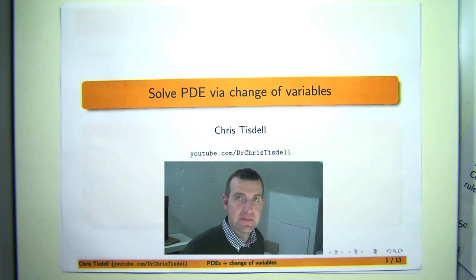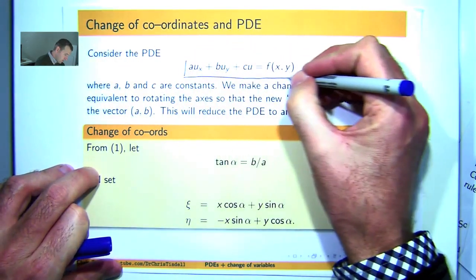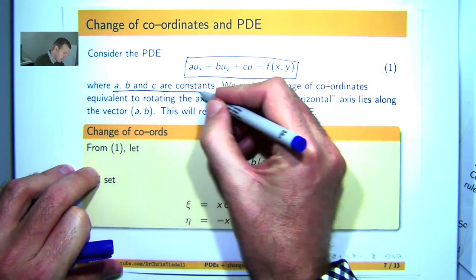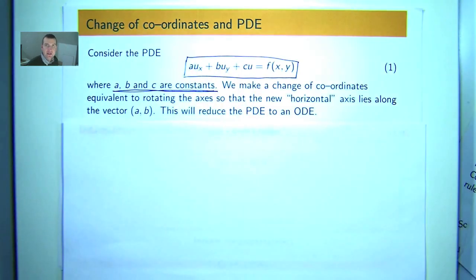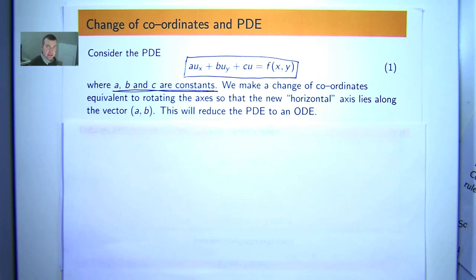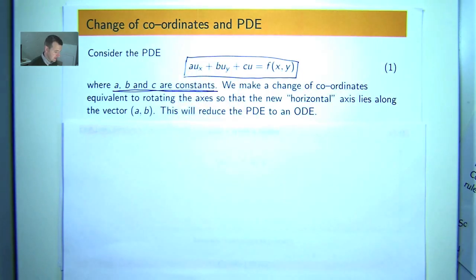In other videos I've talked about the theory behind the ideas and given some examples, but in this particular video I'm going to talk about a special case where we have this PDE and the coefficients are just constants. We've got a first order linear PDE and to solve it we're going to make a change of coordinates. Geometrically, what's going on is we're rotating the axes so that the new horizontal axis lies along the vector AB — the coefficients of these two derivatives.